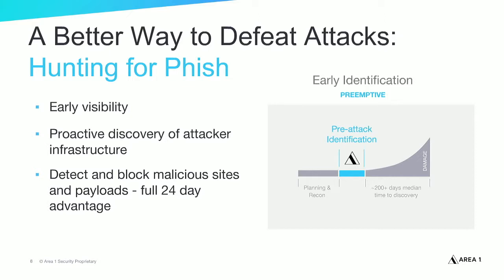An effective prevention strategy needs to fortify security defenses with technology that hunts for malicious sites during the weeks and months hackers are establishing or compromising websites in preparation for launching their attacks. This preemptive defense provides the early visibility and threat indicators necessary to protect an organization from impending attacks. Arming email, web, and network cyber defenses with early visibility into phishing sites and payloads enables more effective detection and blocking of malicious web downloads and command-and-control communication, preventing cyber breaches.